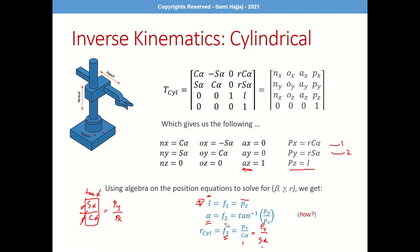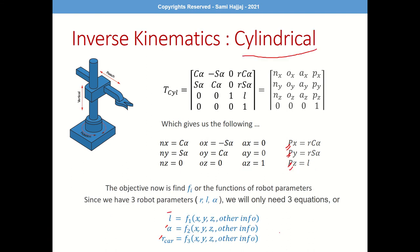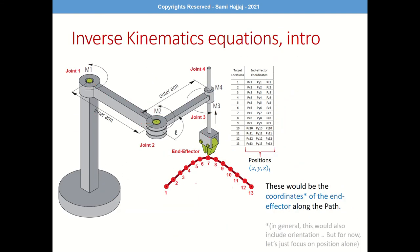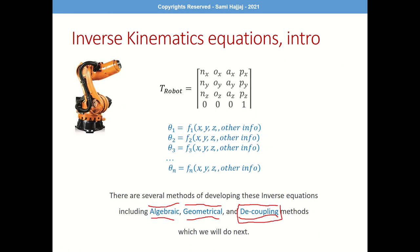Now with the algebraic inverse equations available, we can solve any inverse problem for the cylindrical robot. If you want the robot to travel along a certain path and you have a set of coordinates, just plug them into these equations to get the corresponding set of robot parameters R, alpha, and L.